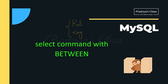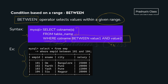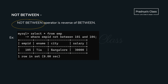The BETWEEN operator selects values within a given range. The syntax is: SELECT column_names FROM table_name WHERE column_name BETWEEN value1 AND value2. For example: SELECT * FROM employee WHERE employee_id BETWEEN 101 AND 104 — both limits are inclusive, so records from emp_id 101 through 104 are displayed.